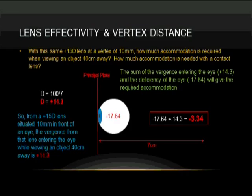From a fifteen diopter lens that's ten millimeters in front of the eye, the vergence of that lens when the light enters the eye while viewing an object forty centimeters away is plus 14.3, which means that since the deficiency of the eye is minus 17.64, when you add divergence to that, you end up having to accommodate 3.34 diopters.